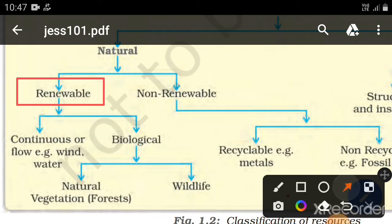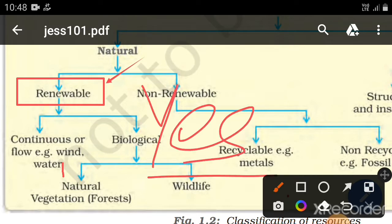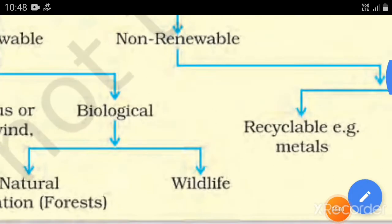Can these things — biomass, clouds, geothermal — be reproduced? Yes, they can. Renewable resources are resources which can be renewed or reproduced by physical, chemical, and mechanical processes. Resources which can be renewed or reproduced by all these methods are simply called renewable resources.